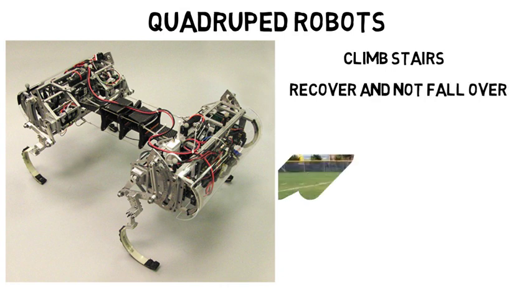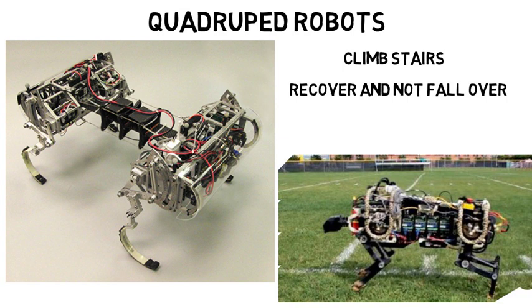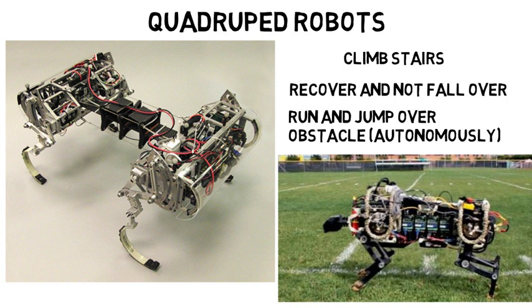MIT even worked on a robotic cheetah a few years back, and successfully made it the first four-legged robot to run and jump over an obstacle autonomously. Yes, it is easy for humans and many animals to jump, but to make a robot do this is no easy task.